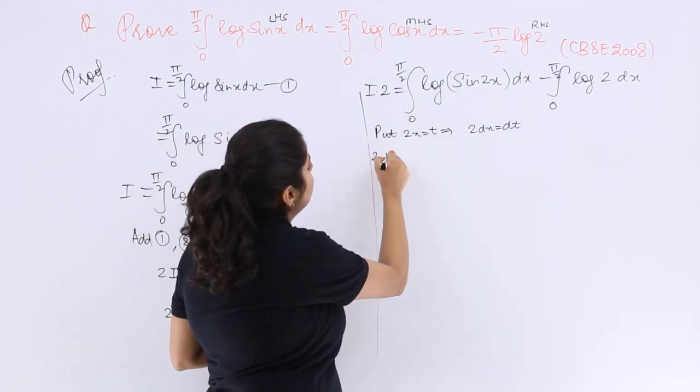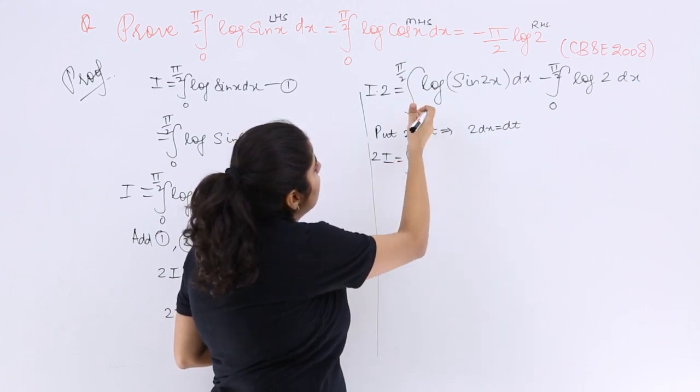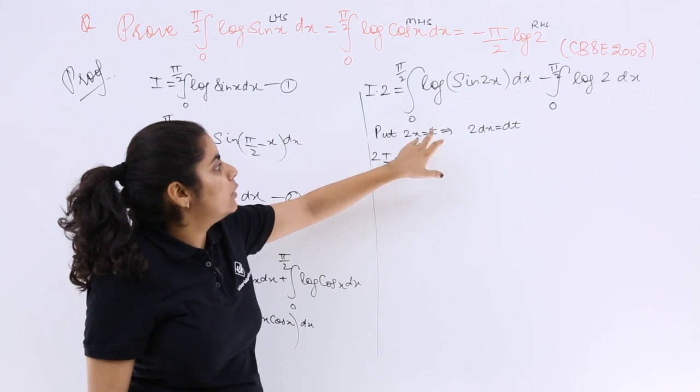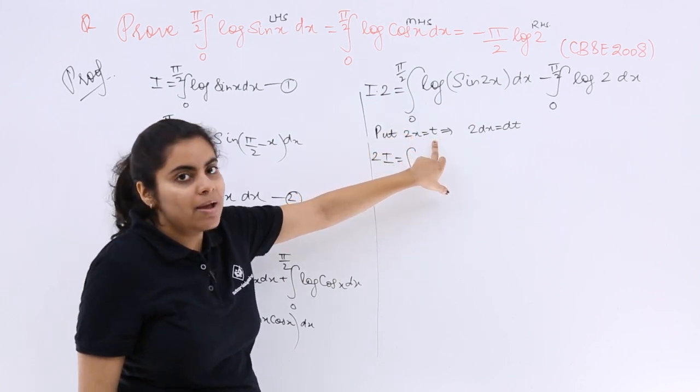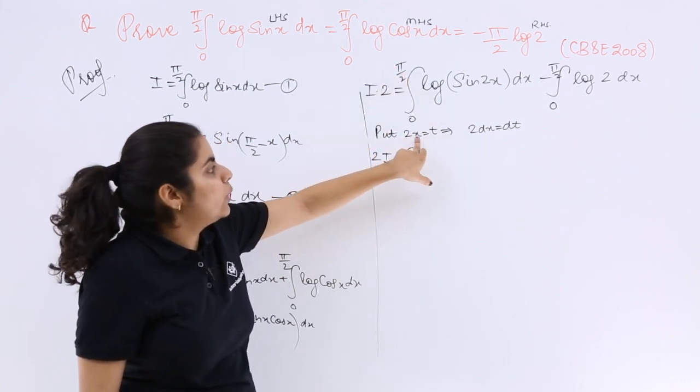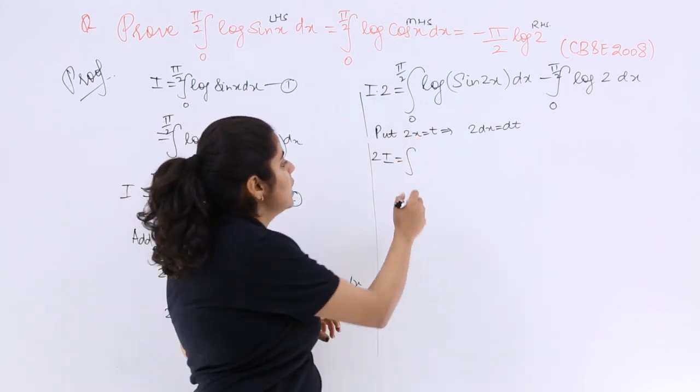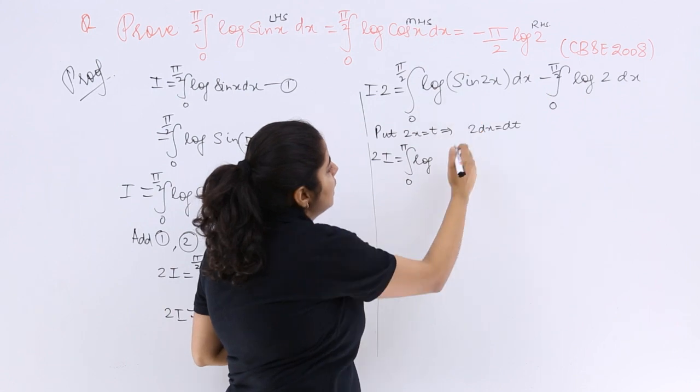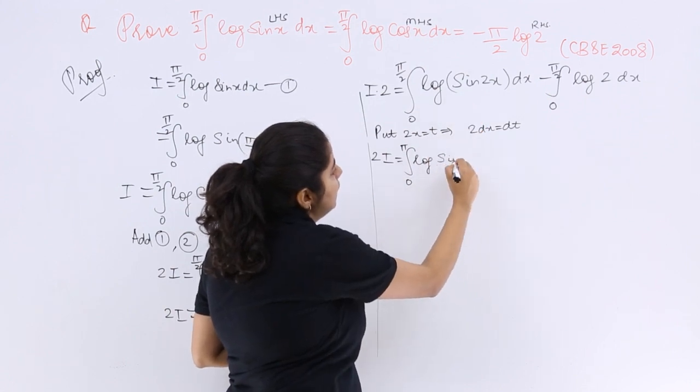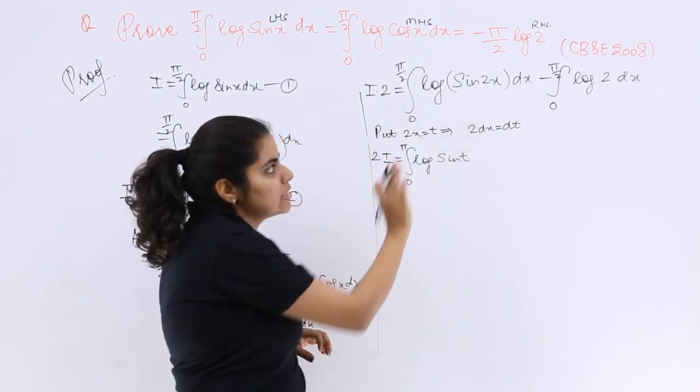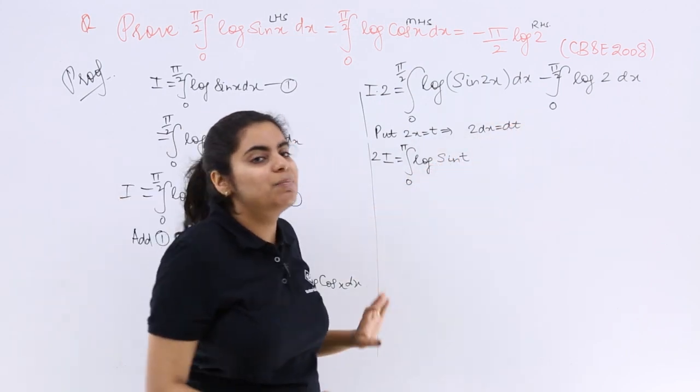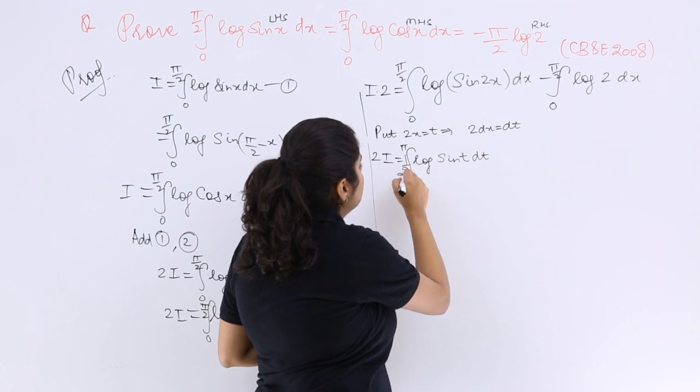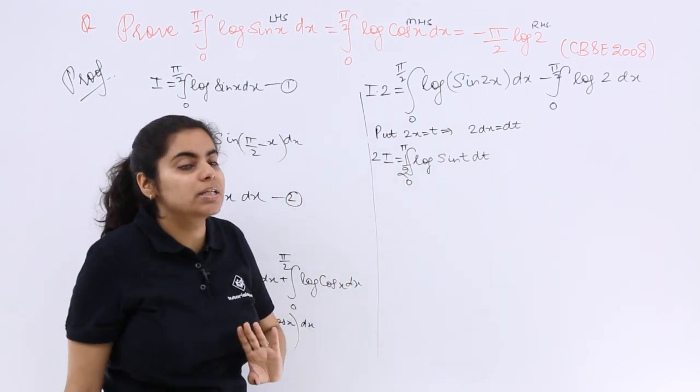Now I have 2I is equal to, the limits would also change, right? Because if 2x is equal to t that means 0, and here π/2 is there, 2 into π/2 makes it π, so it is 0 to π this time, log sin t because 2x is equal to t. What is dx? dx is dt by 2, so it is dt and 1 upon 2 being a constant, let's take it outside. I hope you understand this.